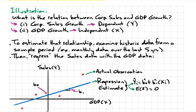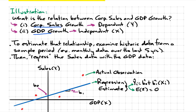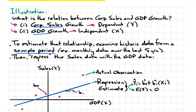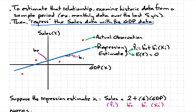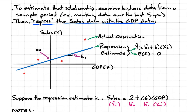To estimate this relationship between corporate sales and GDP, we're going to look at some historical data from a sample period. For example, the analyst may look at monthly data over the last five years, which would represent 60 observations. Using these 60 observations, the analyst would then regress the sales data on the GDP data. Here's a visual depiction of what's going on.